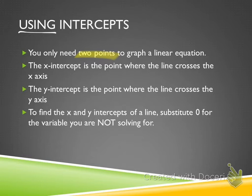Same thing goes with the y-intercept. The y-intercept is the point where the line crosses the y-axis. The last point involves finding the intercepts — we find them by substituting zero for the variable you are not solving for. If you're trying to find the x-intercept, substitute zero for y. If you're trying to find the y-intercept, substitute zero for x.